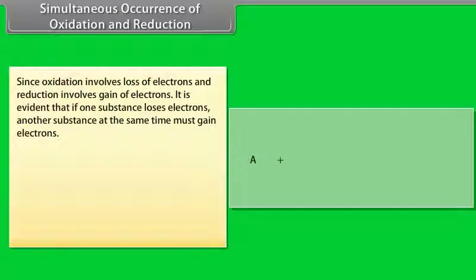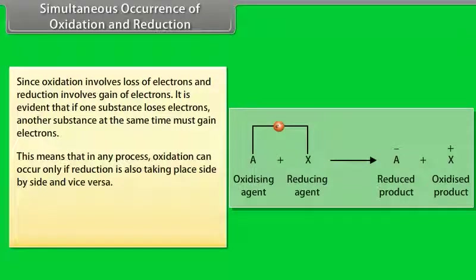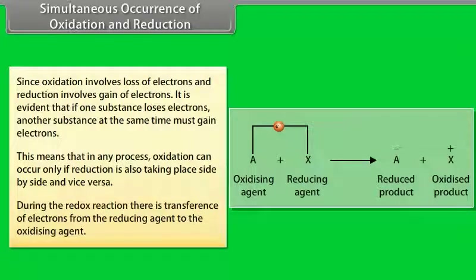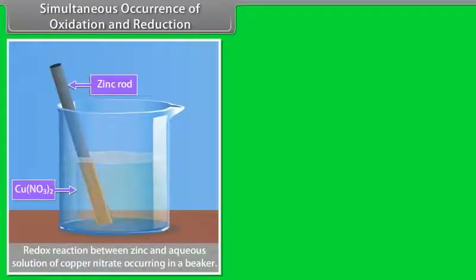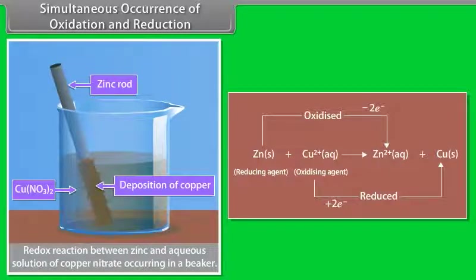Simultaneous occurrence of oxidation and reduction: Since oxidation involves loss of electrons and reduction involves gain of electrons, if one substance loses electrons, another substance at the same time must gain electrons. This means oxidation can occur only if reduction is also taking place simultaneously, and vice versa. During a redox reaction, there is transference of electrons from the reducing agent to the oxidizing agent. For example, zinc atoms lose electrons and are oxidized to zinc ions, whereas cupric ions gain electrons and are reduced to copper atoms. Here, cupric ions act as the oxidizing agent and zinc atoms act as the reducing agent.